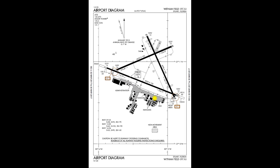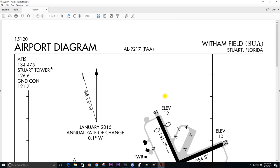We also have this large non-movement area where we can move around freely without talking to ATC. Although we may want to check in with them, we could easily taxi from this FBO all the way over to that FBO without making any radio calls if we were just repositioning our aircraft or taxiing to get fuel. Now we see hotspot one and hotspot two designations here, so we're going to check our chart supplement and see what that's all about.